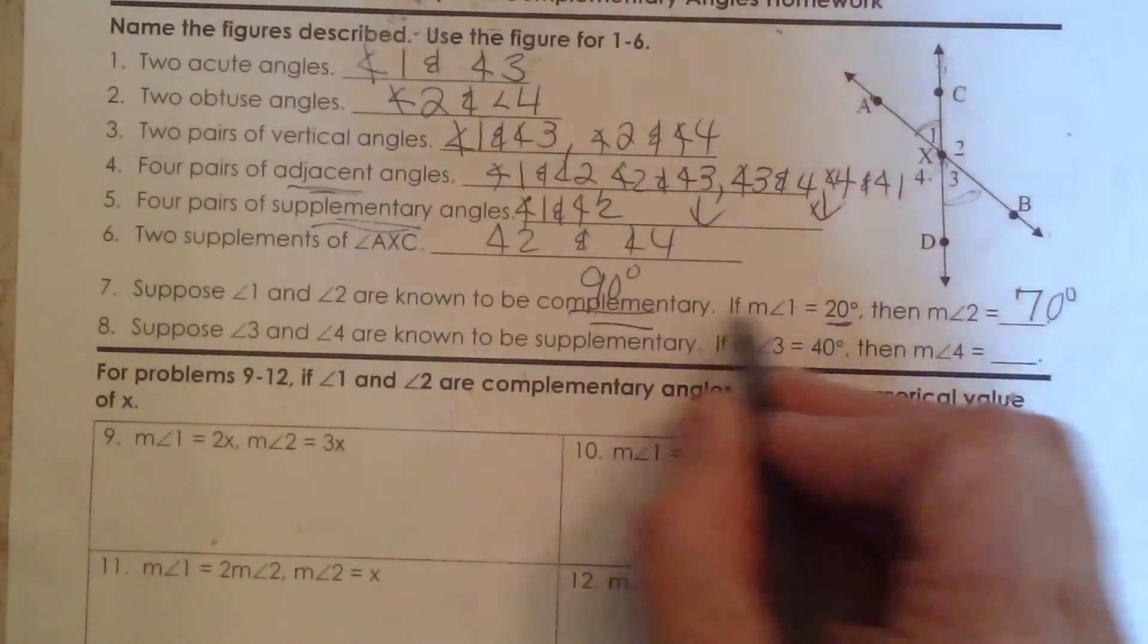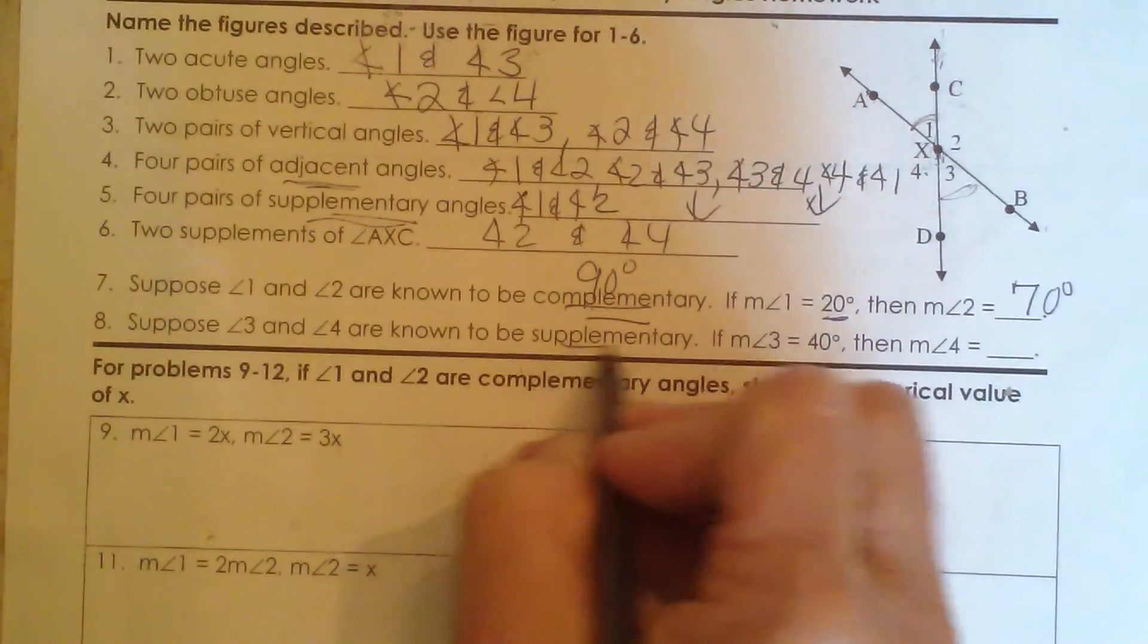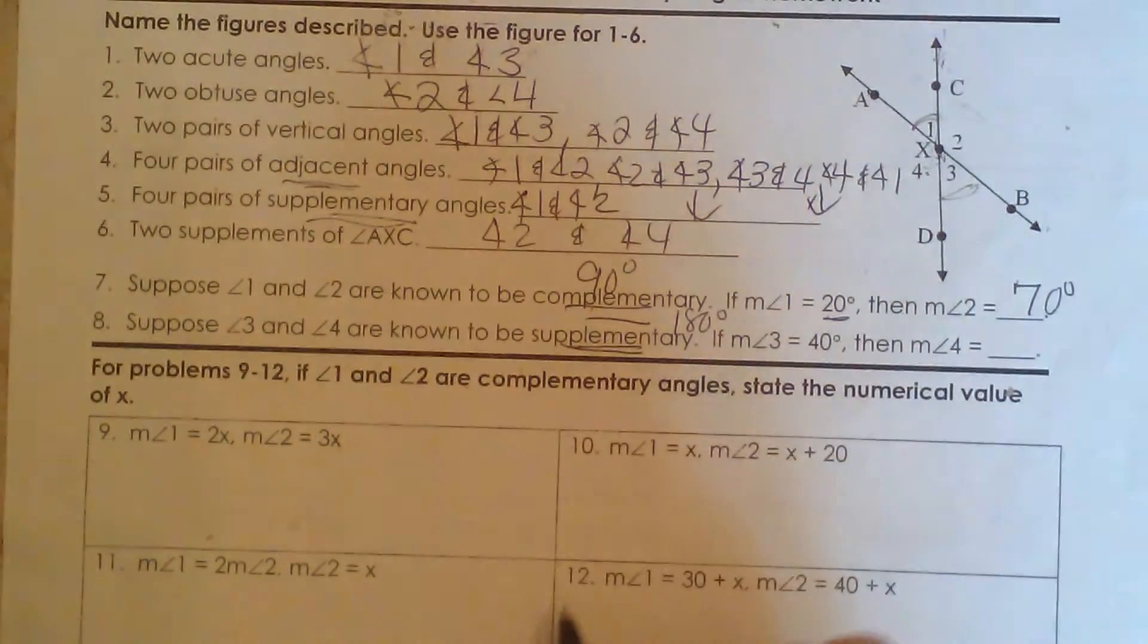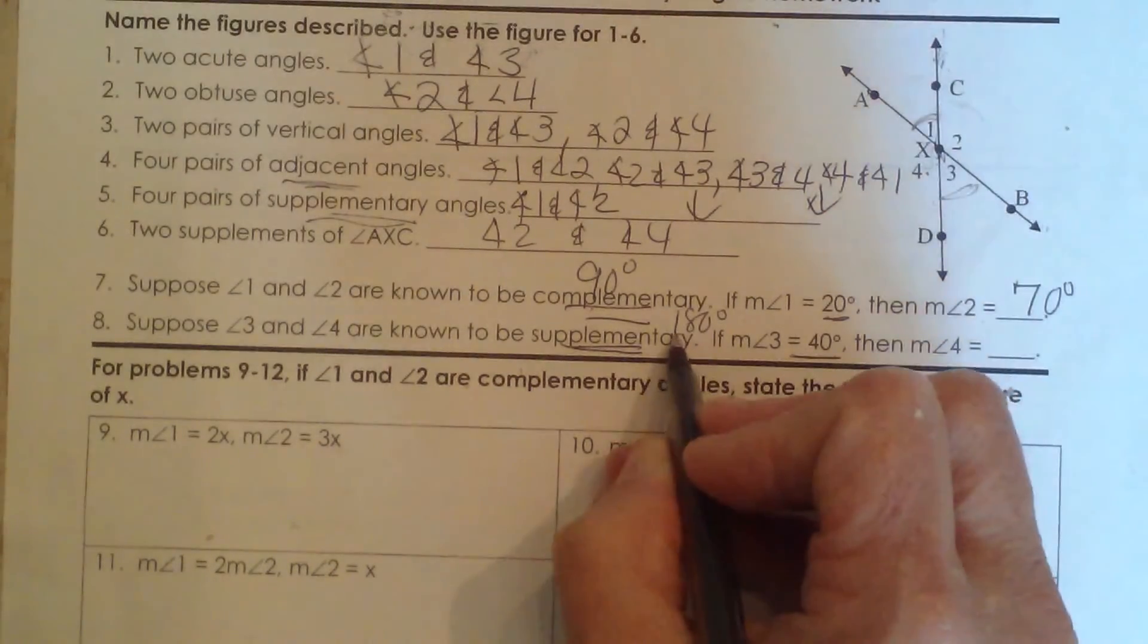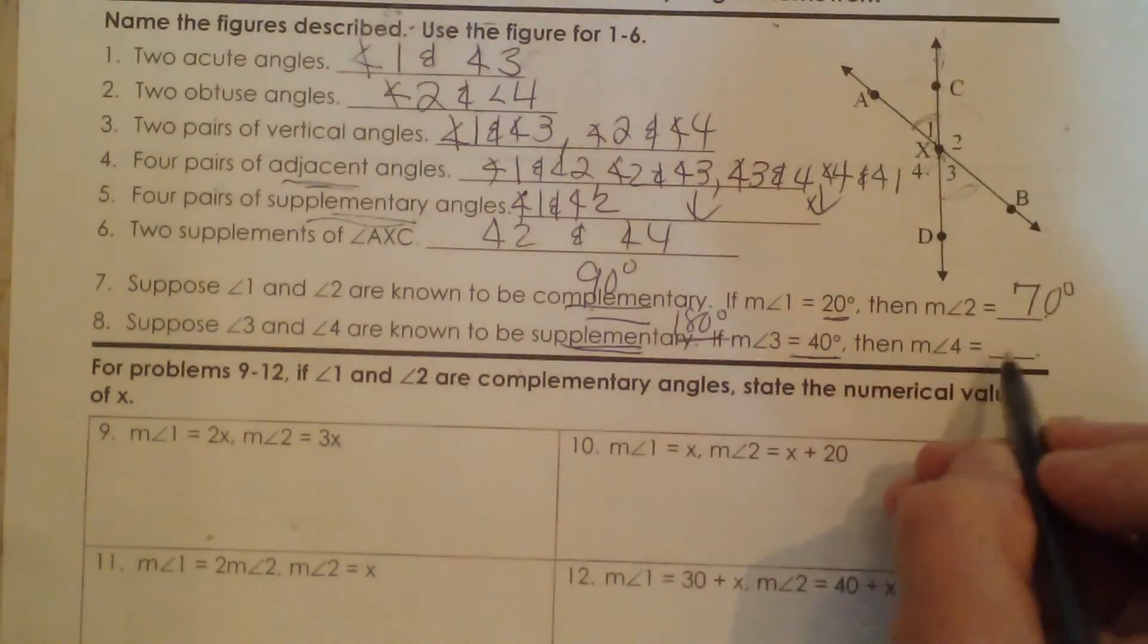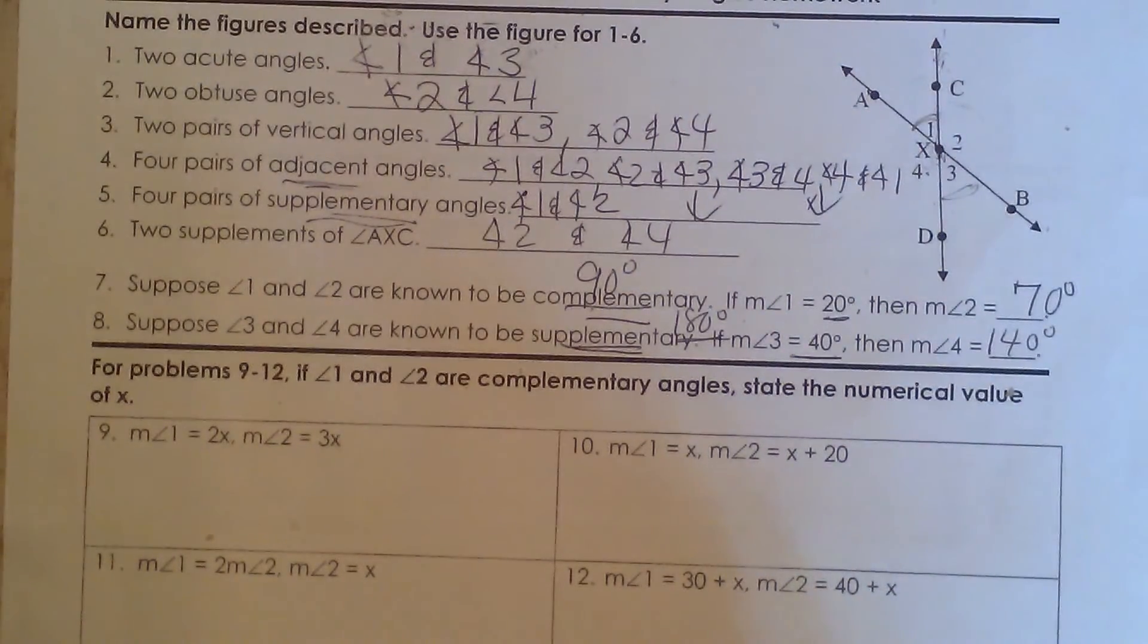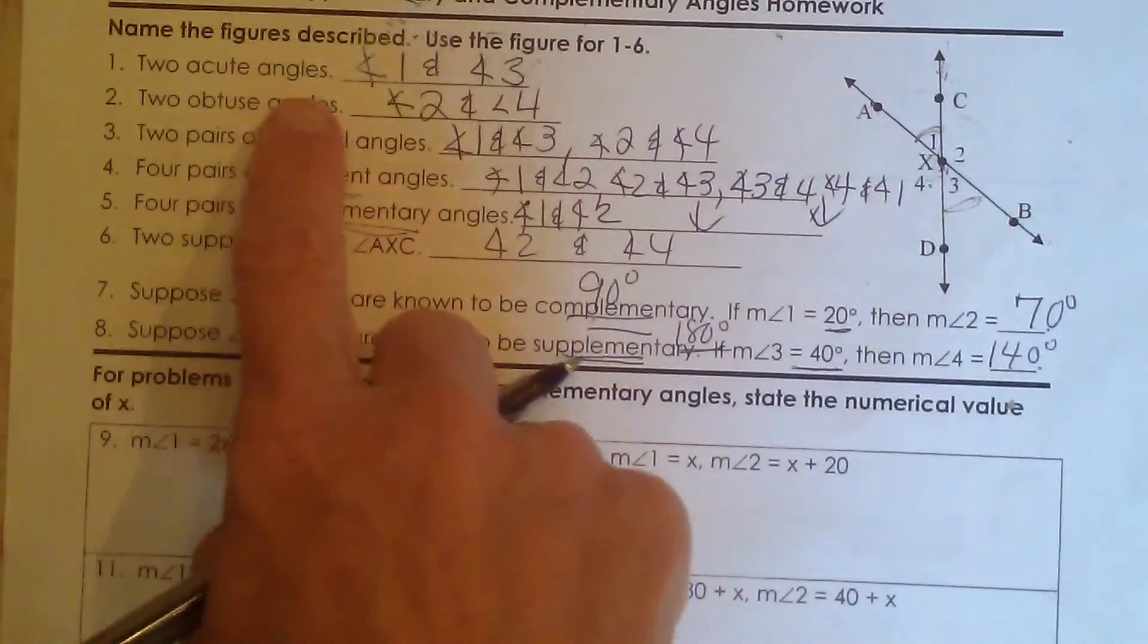Suppose angles 3 and 4 are known to be supplementary. Well, what does supplementary mean? That's two angles that add to 180 degrees. So if angle 3 is only 40 degrees and they have to add to 180, that means angle 4 must be 140 degrees. And that's defining these terms: acute, obtuse, vertical, adjacent, supplementary angles, complementary and supplementary pairs.